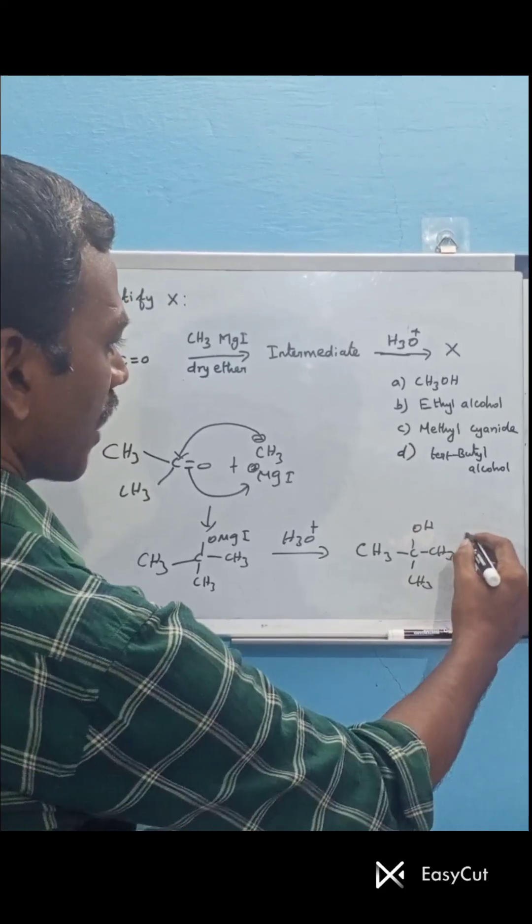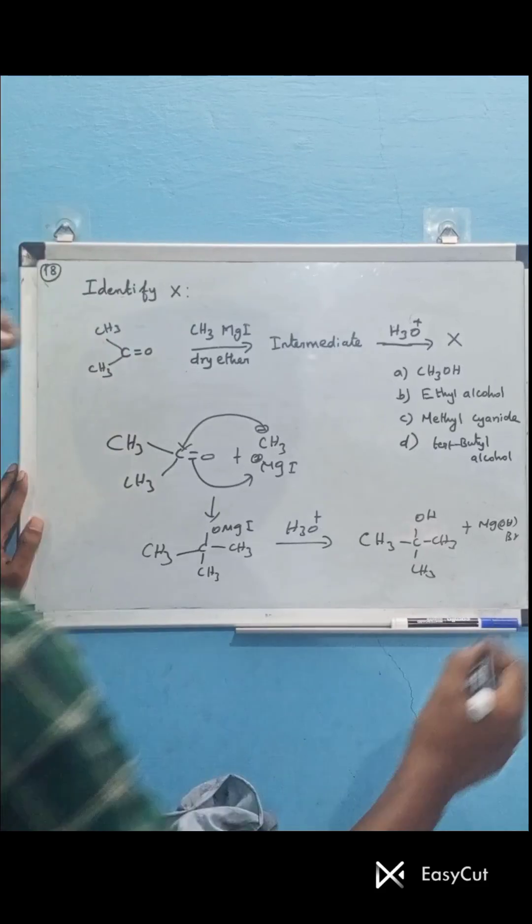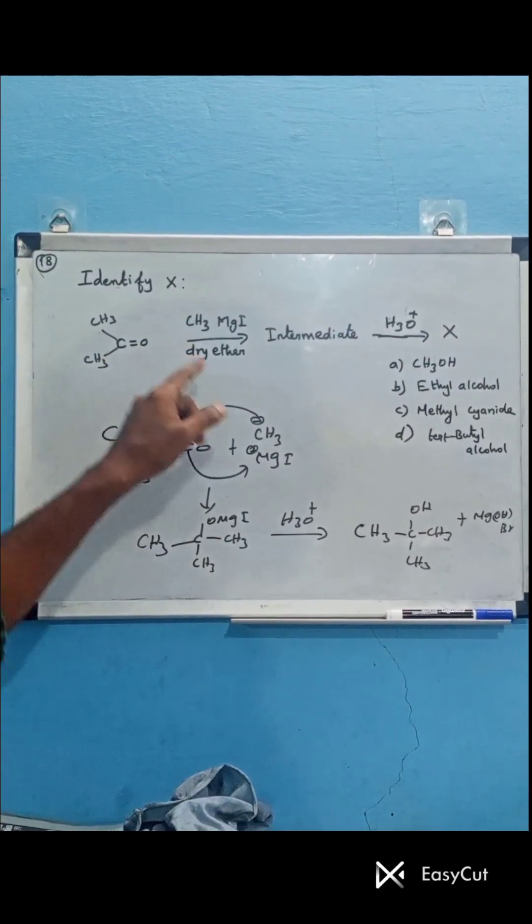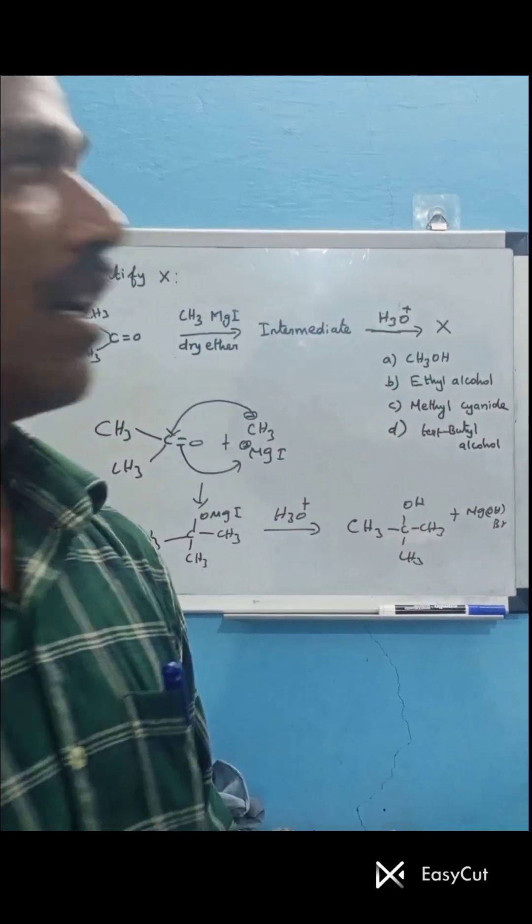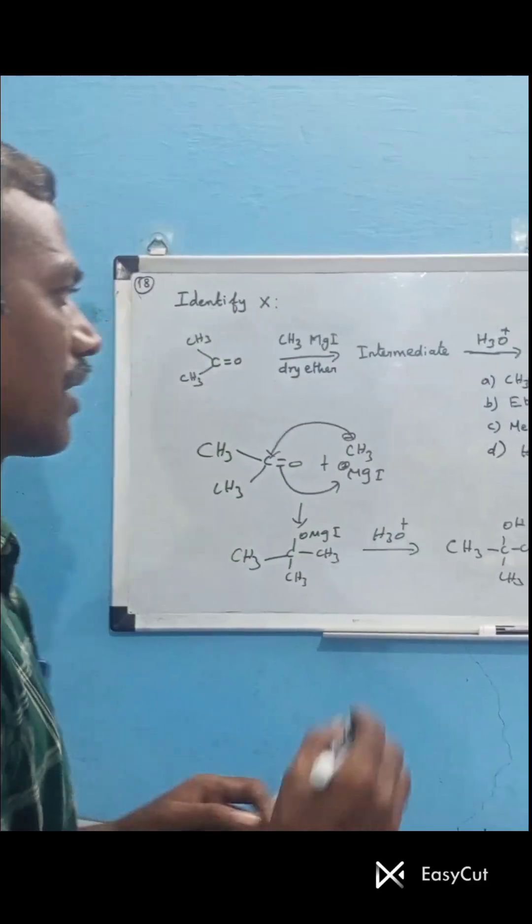Plus magnesium salt. So acetone reacts with methyl magnesium iodide, upon acidic hydrolysis it forms tertiary butyl alcohol. The answer to the question is B, tertiary butyl alcohol.